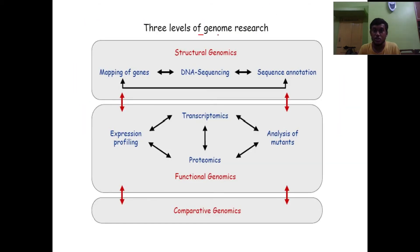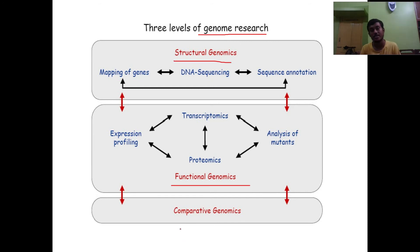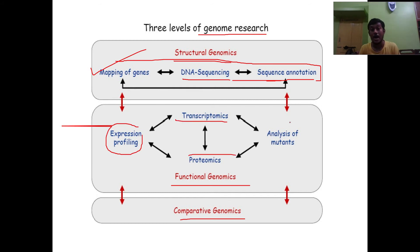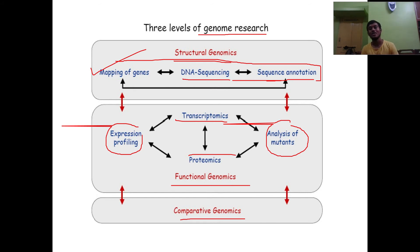There are three levels of genome research — similar names to the pillars of genomics but with different criteria. In structural genomics, mapping of genes occurs along with DNA sequencing and sequence annotations. In functional genomics, expression profiling, transcriptomics, proteomics, and analysis of mutants are the prime areas of importance. In comparative genomics, we basically compare structural and functional genomics to determine which gives better results.